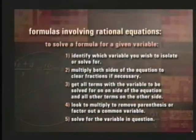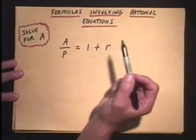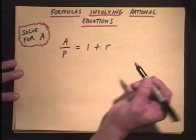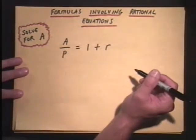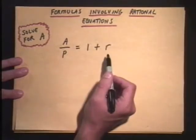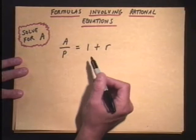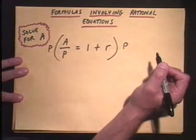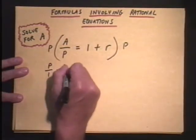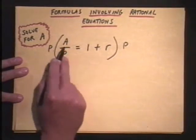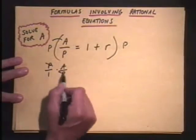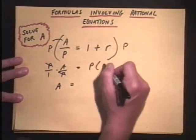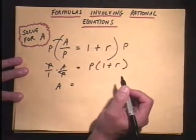And we will find that we have formulas involving rational equations. In this case, we have A divided by P equals one plus R, and we want to solve this for A. So in order to do that, we need to multiply the equation through by the common denominator, which in this case is the only denominator of P. So we will go ahead and multiply everything through by P. So P over one times A over P would be this side here, distributing the P through. And you can see the P's will cancel out, leaving us with A here, equals over here P times one plus R.